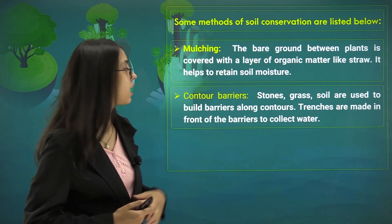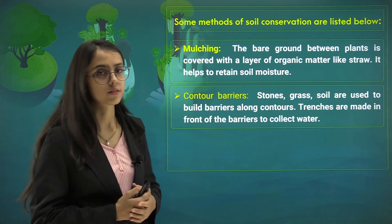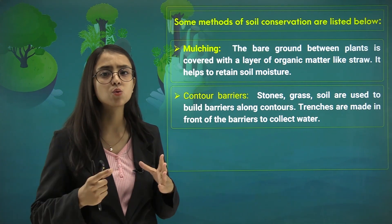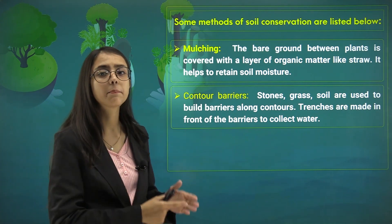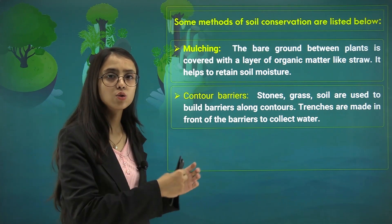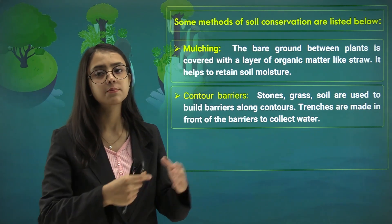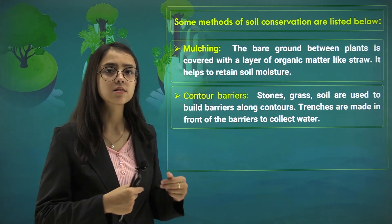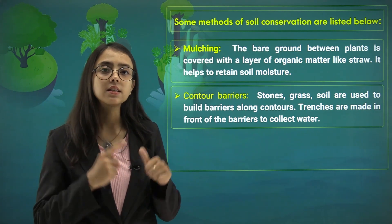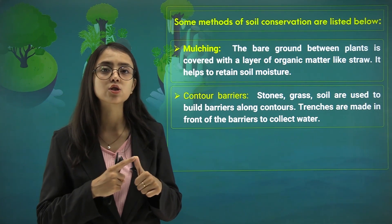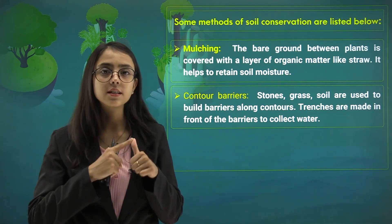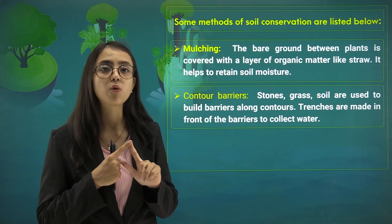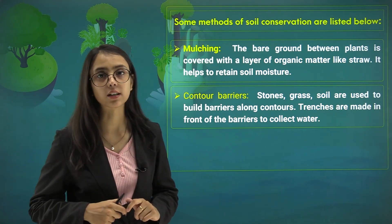Then we have contour barriers. Stones, grass, and soil are used in order to build barriers along the contour and along the boundaries, and trenches are made in front of barriers to collect water. This is regarded as conservation of soil because it does not allow soil erosion and also helps to retain the water content and moisture in the soil.